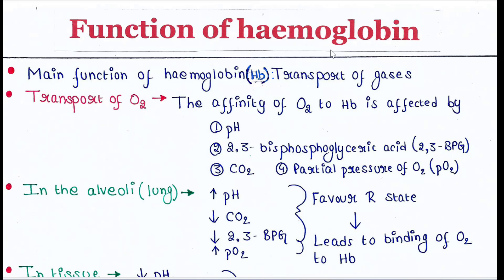Now we will see the function of hemoglobin. The main function of hemoglobin is to transport gases. For transport of oxygen, the affinity of oxygen to hemoglobin is affected by pH, 2,3-bisphosphoglyceric acid (2,3-BPG), CO2 concentration, and partial pressure of oxygen.